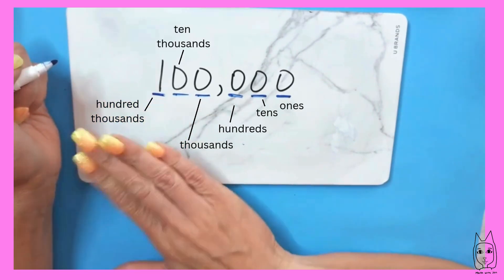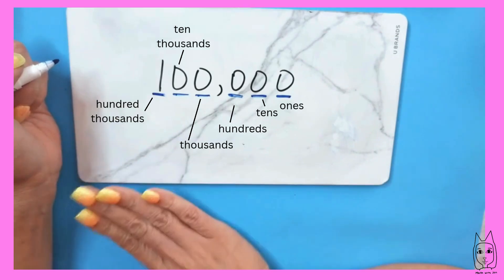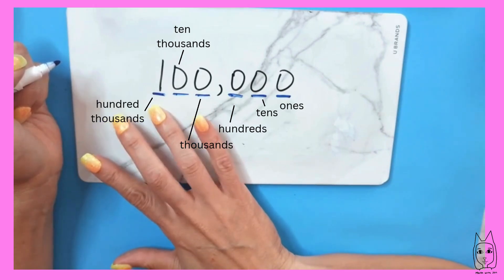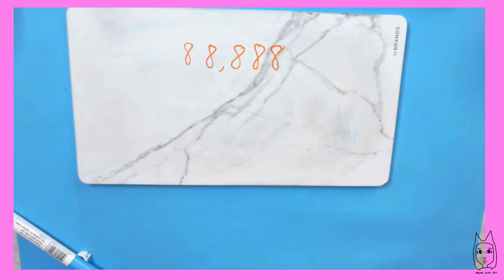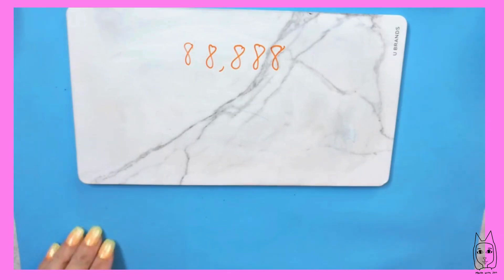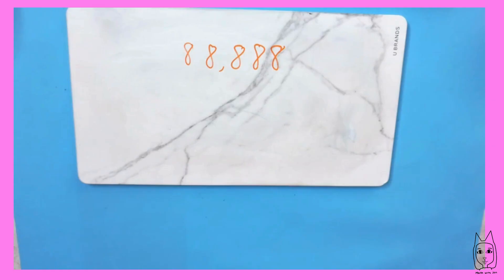And that's where we're stopping for grade three. Grade three only goes up to numbers until you hit that 100,000. Okay, we're going to look at 88,888. The reason why I chose the same digit for each of the place values is so that we can really talk about what the place values are representing.